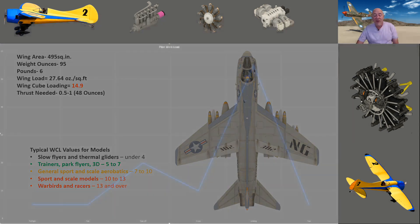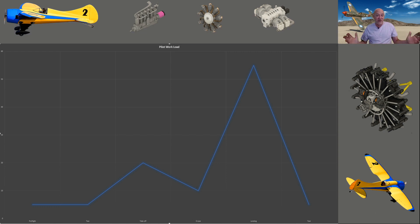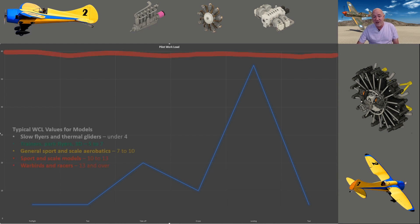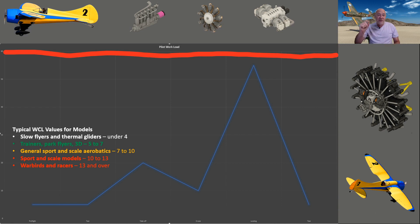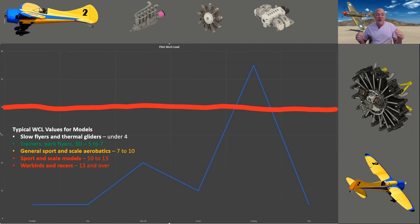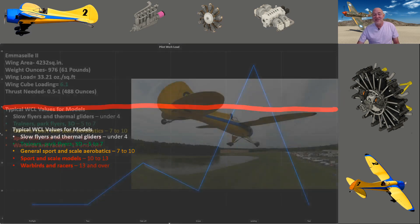Now I want to talk about your skills as a pilot and what that means for cubed wing loading. Taking off uses some of your skills, but landing takes most of your skills. If you're a really good pilot your narrow safety margin is still landing. If you're not a great pilot yet, you might want to be flying something in that five to seven range — very forgiving. Until you build your hours and have a lot of success, start with low cubed wing loads. If somebody says this is a trainer, look at the wing area, the weight, and the cubed wing loading. If it's a 10, that's not a trainer — I've seen a lot of airplanes sold as trainers that are garbage trainers.